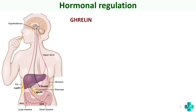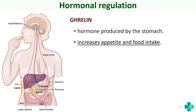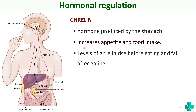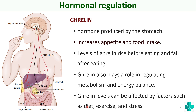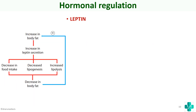Ghrelin is produced by the stomach and increases appetite and food intake. The level of ghrelin rises before eating and falls after eating — it signals that the body is hungry. It also plays an important role in regulating metabolism and energy balance. Ghrelin levels can be affected by factors such as diet, exercise, and stress.